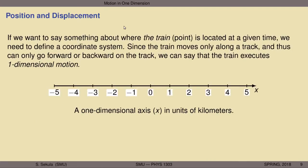Now that we can represent the train as a single point, we want to represent its location at a given moment in time. To do that we need a coordinate system. Trains move along tracks, restricting their motion to forward or backward along the track. We can stand next to a track, face one direction, and define that as forward and the other as backward — establishing an arbitrary but useful sense of direction.